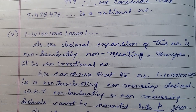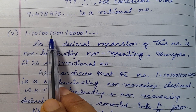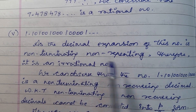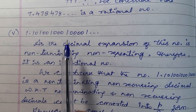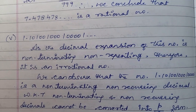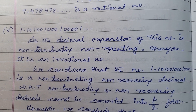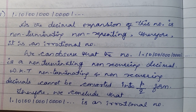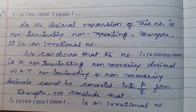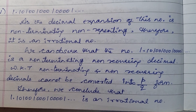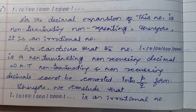Next, the fifth one: 1.101001000100001... This is a non-terminating, non-recurring irrational number. As the decimal expansion of this number is non-terminating and non-repeating, therefore it is an irrational number. We can observe that 1.101001000100001... is a non-terminating, non-recurring decimal. We know that non-terminating and non-recurring decimals cannot be converted into P/Q form. Therefore, we conclude that 1.101001000100001... is an irrational number.